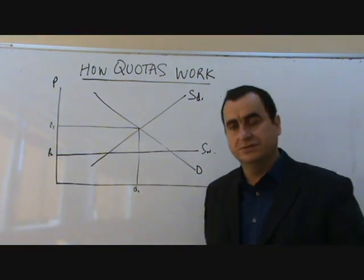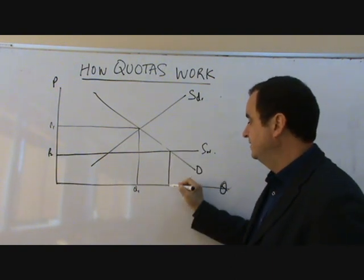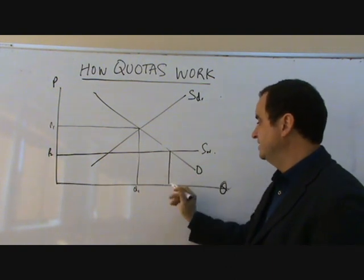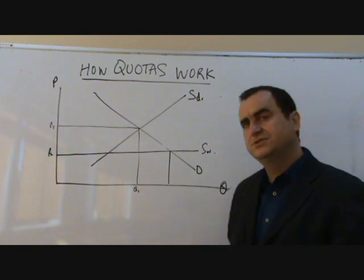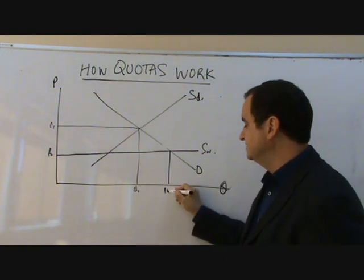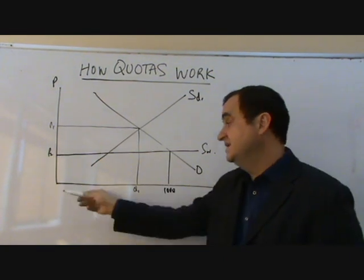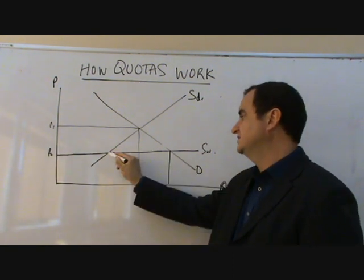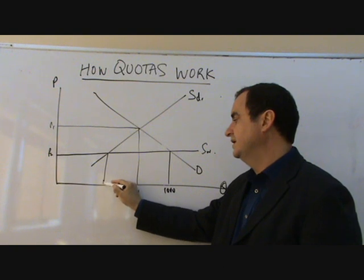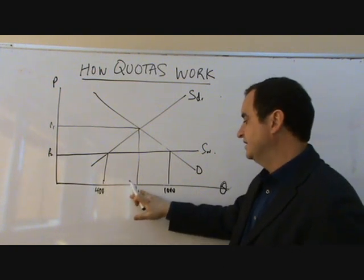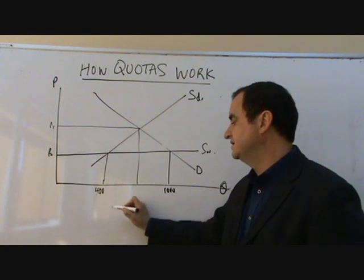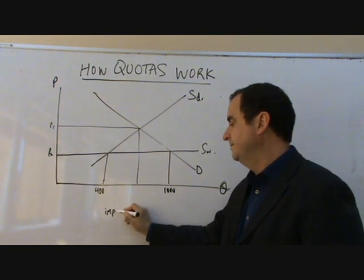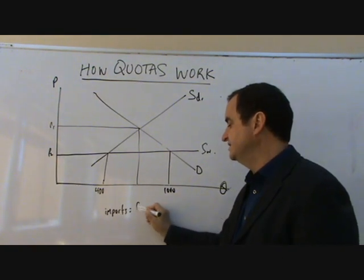And without any restriction on trade, there would be a huge increase in the quantity that would be demanded. Let's call this 1000. And domestic suppliers would not be interested at this low price of supplying so much. Let's say they only were willing to supply 400. That means that imports are 600.